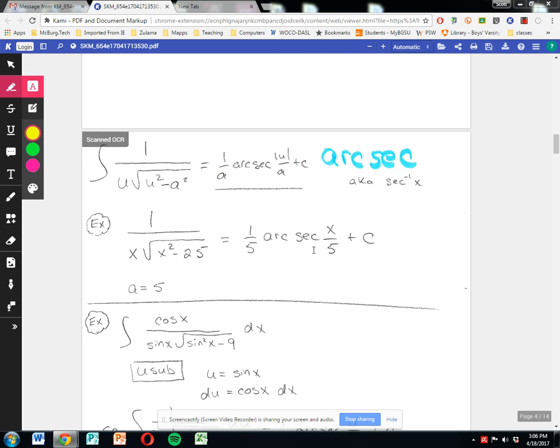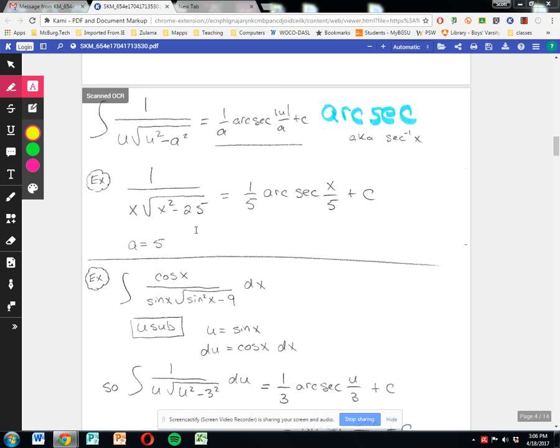Last one, thankfully, we're dealing with arc secant. Arc secant is 1 over u radical u squared minus a squared. The form when you get done is 1 over a arc secant absolute value u over a plus c. If I leave x's out there for x squared and I need 25, this is 5 squared. So the a value is 5. So 1/5 arc secant x over 5 plus c.